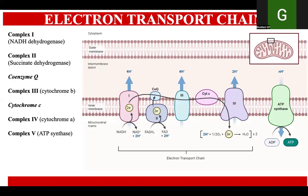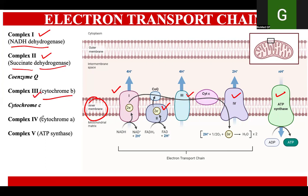If you look onto the electron transport chain, you will see that there are a total of five complexes involved, and these complexes are embedded in the inner membrane of the mitochondria. The complex number one is called NADH dehydrogenase, complex number two is succinate dehydrogenase, complex number three is cytochrome B, complex four is cytochrome A, and complex five is the enzyme ATP synthase.